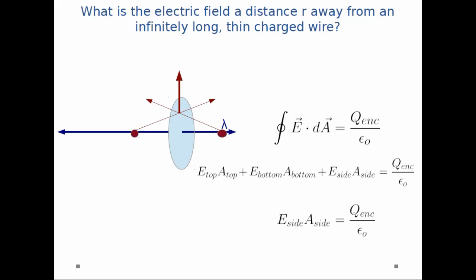For every little piece of charge on one side of that top part, there's an equal corresponding piece on the other side. You can repeat this process for the bottom side of the cylinder as well.